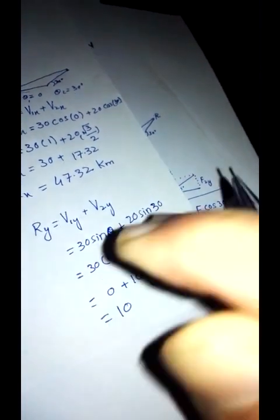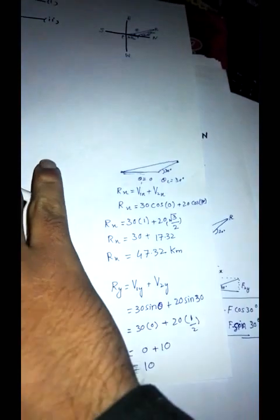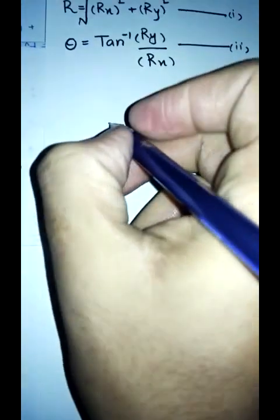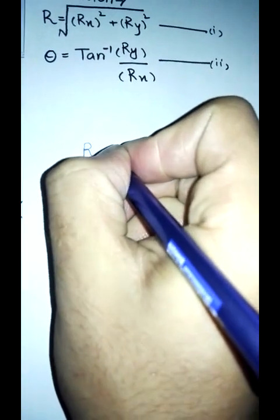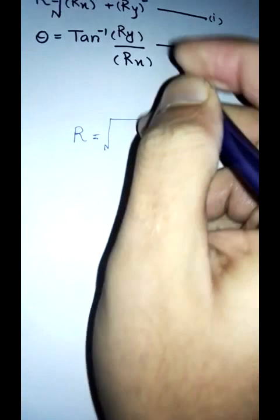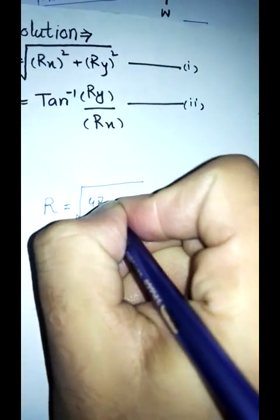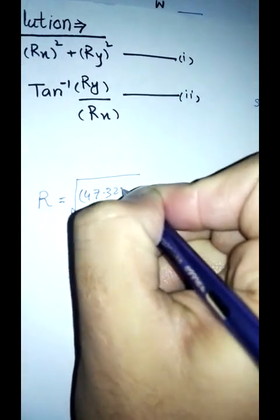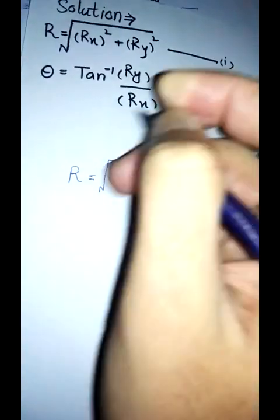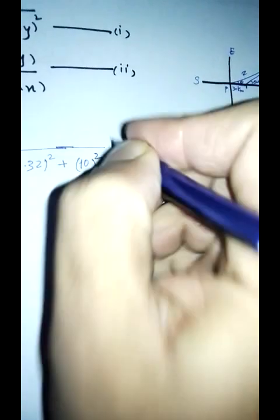So Rx is equal to 47.32 kilometers and Ry is 10 kilometers. So all we need to do is to put these values in the formula. So the resultant will be under the root, Rx squared, 47.32 whole square plus 10 whole square.